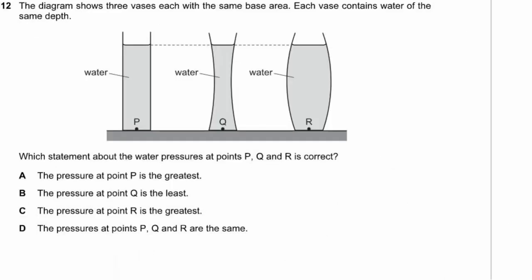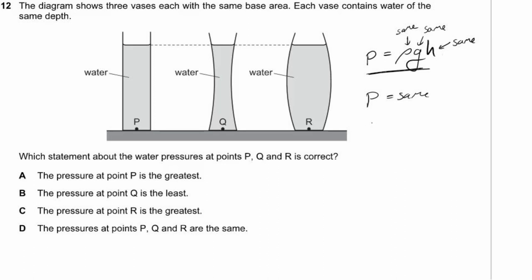Question 12. Three vases with the same base area each contain water of the same depth. Pressure in a liquid equals density times gravity times height. All three have the same water density, the same gravity, and the same height, so the pressure at points P, Q and R is the same. The answer is D.